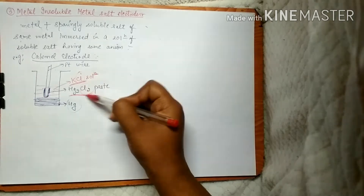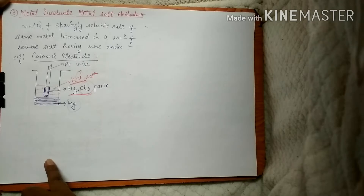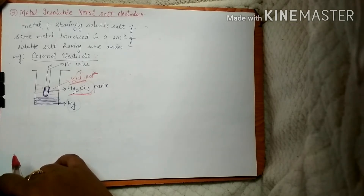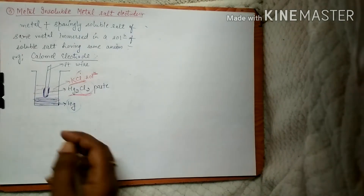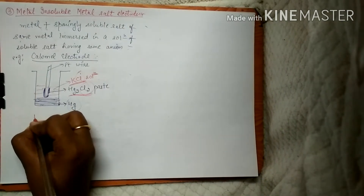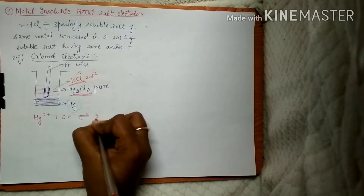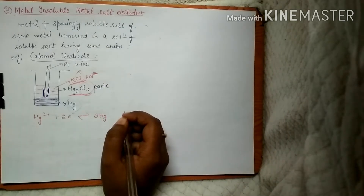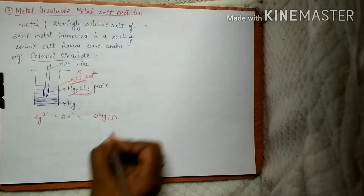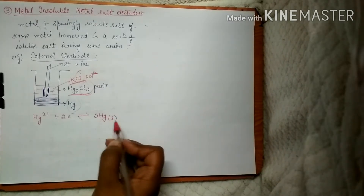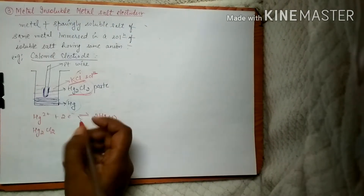On top of this mercury, we are going to take the KCl solution. So now if you see, Hg2Cl2 and KCl both have the same anion, that is Cl⁻. This is how we construct the metal insoluble metal salt electrode. Now, the reaction on this electrode: Hg2²⁺ takes two electrons and changes to 2 Hg.